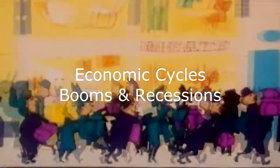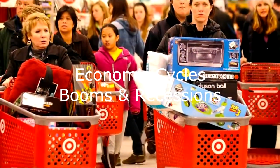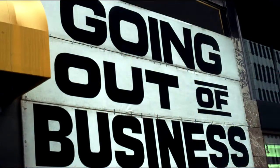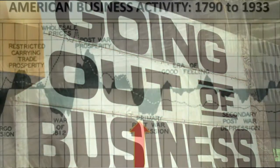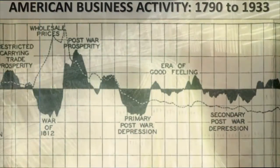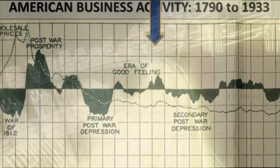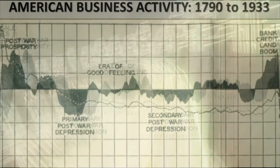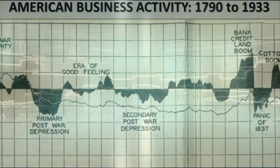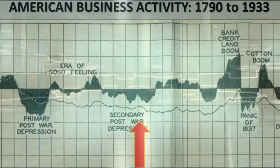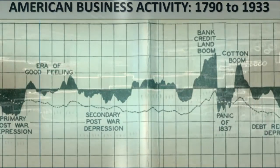Economists divide the cycles into two main phases: booms and recessions. Associated with a strong economy, booms are measured as progressions above the long-run trend. In contrast, recessions are characterized by below-trend activity.